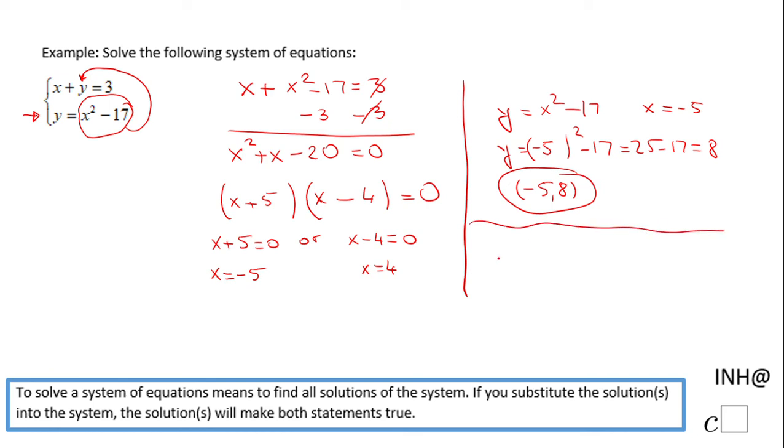Now we have a second solution, which is given by x equals 4. In the same equation, we can plug 4, and we have 4 square minus 17. That will be 16 minus 17, and that will be negative 1. So the second solution for this system of equations is 4 and negative 1.